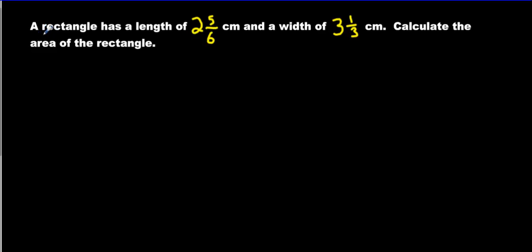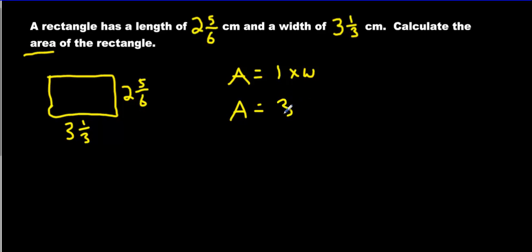Second question talks about a rectangle. So we'll draw our rectangle. And we have a length of two and five-sixths and a width of three and a third. So three and a third is my bigger one. I'm going to write it over here. This can be our width. And my length is going to be on this side. It's the shorter edge. And now we're asked to find the area. So area, what is area? It's base times height. Right. So we're going to go area is base times height, or we can say length times width. And then we'll pop the numbers in.